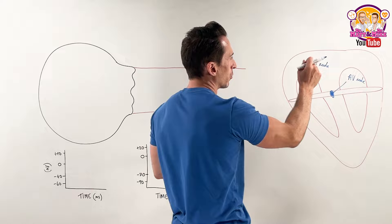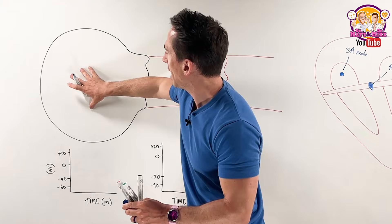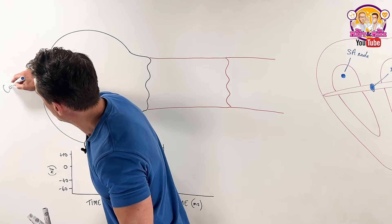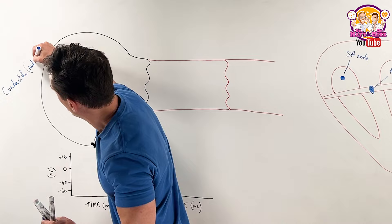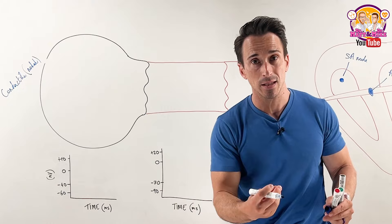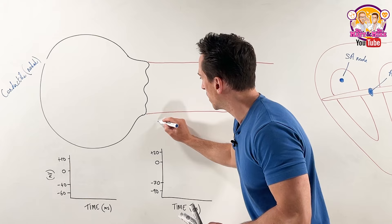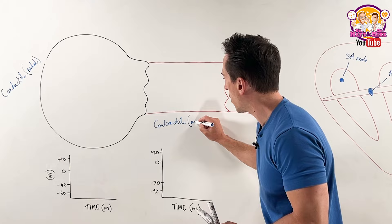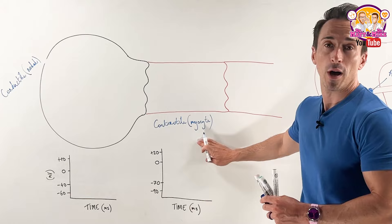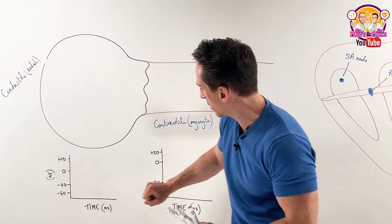What I've drawn up here is a conductile cell, also known as a nodal cell. So this is a conductile cell, also known as a nodal cell - SA node or AV node - also known as a pacemaker cell because it sets the rhythm of the heart. And here we have a contractile cell, which is myocardium or a myocyte - specifically, you'd say it's a cardiomyocyte. We'll talk about the graphs for each in a moment.